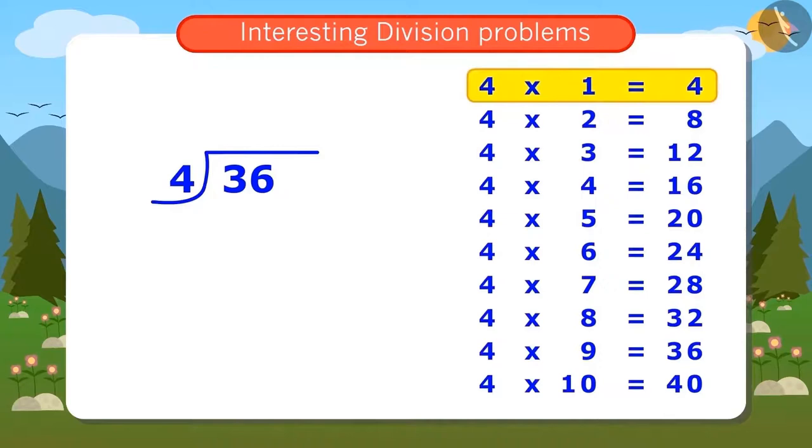"Four ones are four. Four twos are eight. Four threes are twelve. Four fours are sixteen. Four fives are twenty. Four sixes are twenty-four. Four sevens are twenty-eight. Four eights are thirty-two. Four nines are thirty-six."